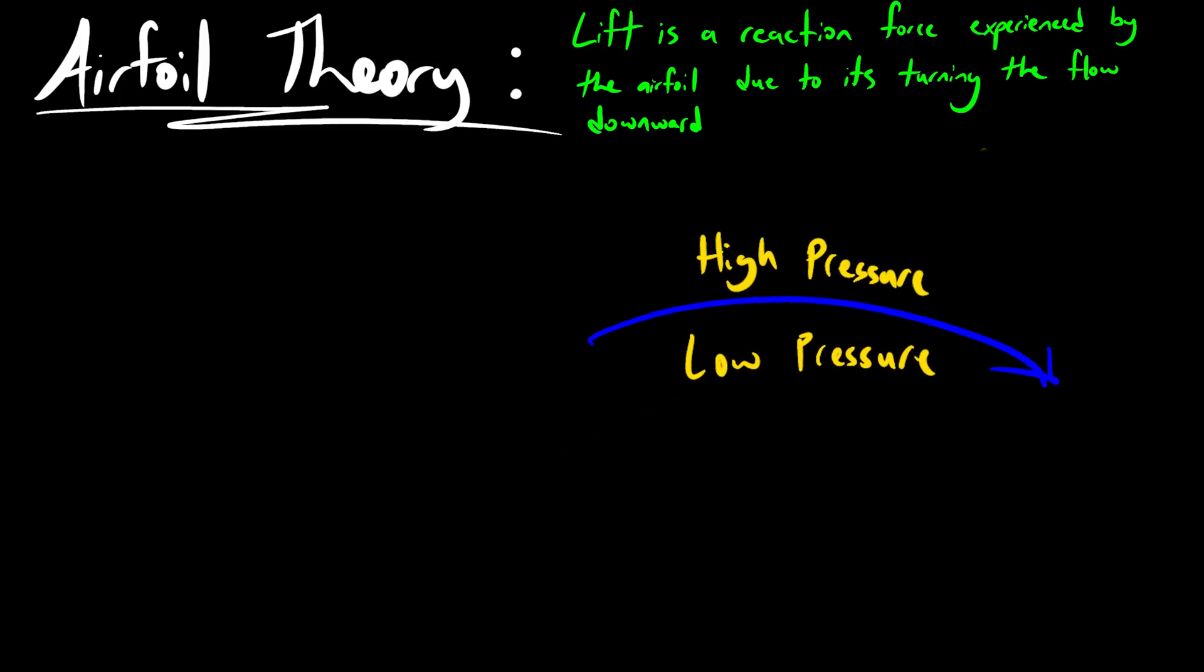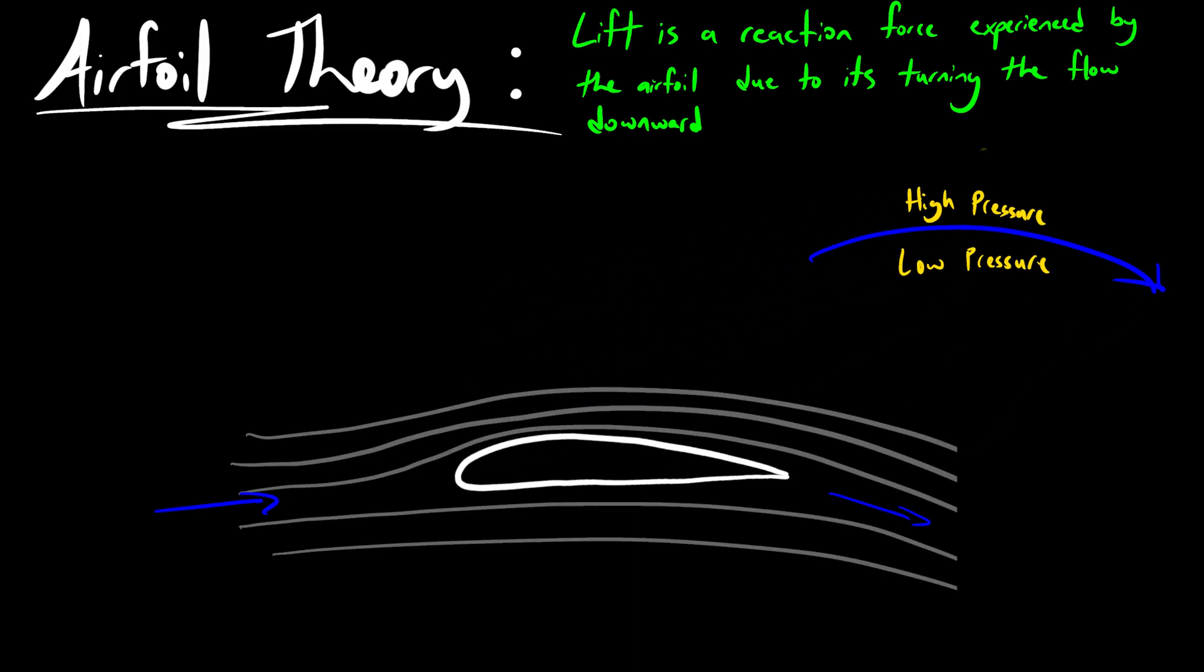So if we take a look at the flow over an airfoil, we can see that the flow turns downward. But, why is that? Well, we know that for lift to be generated, there must be a pressure difference between the top and bottom. And relative to the ambient pressure, the top of the airfoil must be at a lower pressure due to the curvature downward. And on the bottom, there must be a relatively higher pressure compared to the ambient, turning the flow downward there. So as I said, this pressure difference turning the flow downward is what gives us lift.